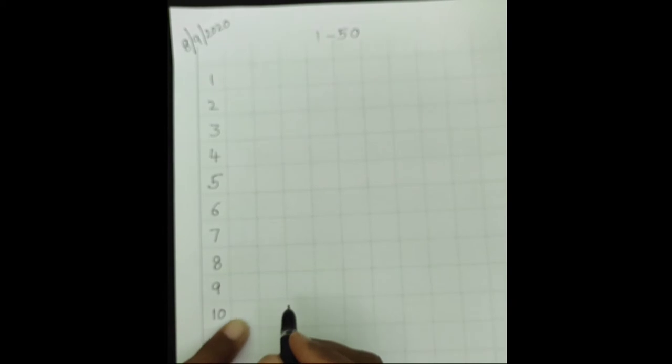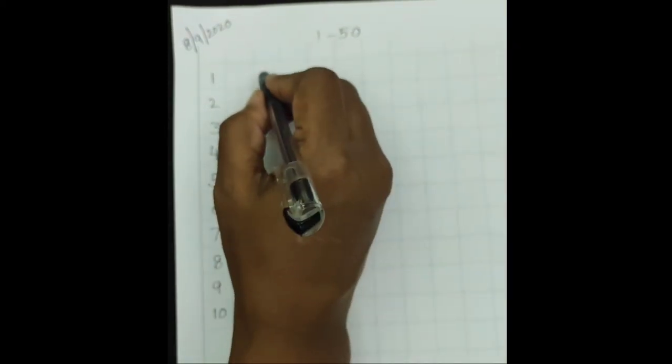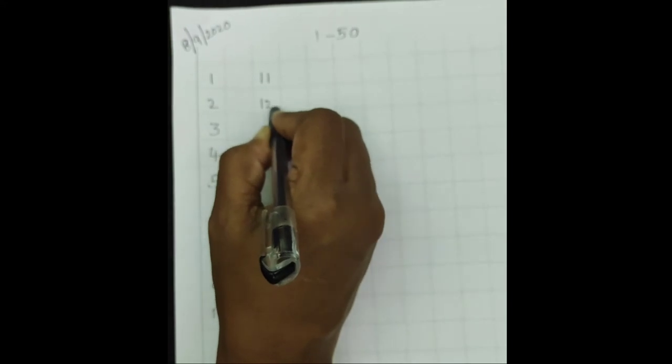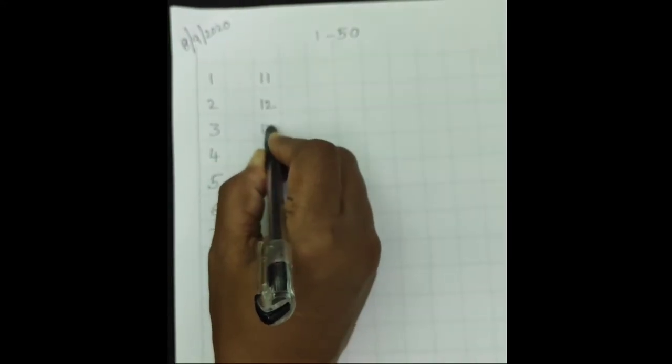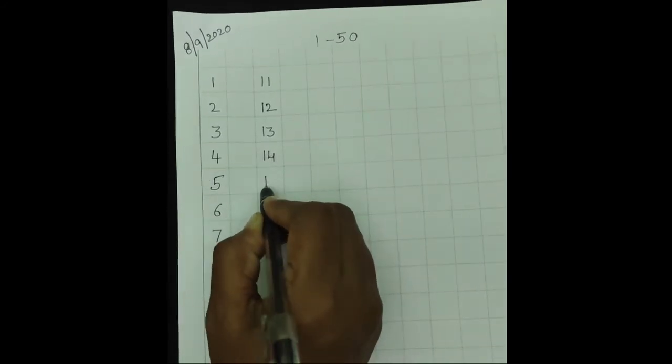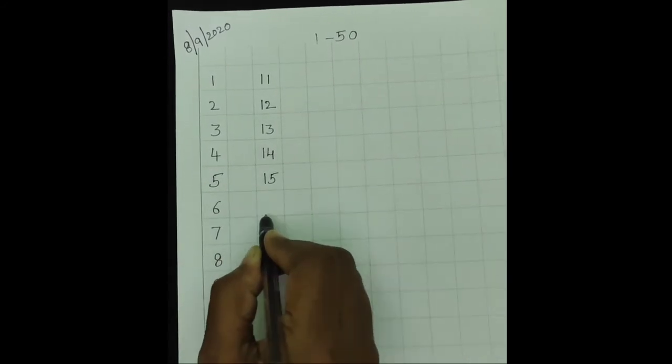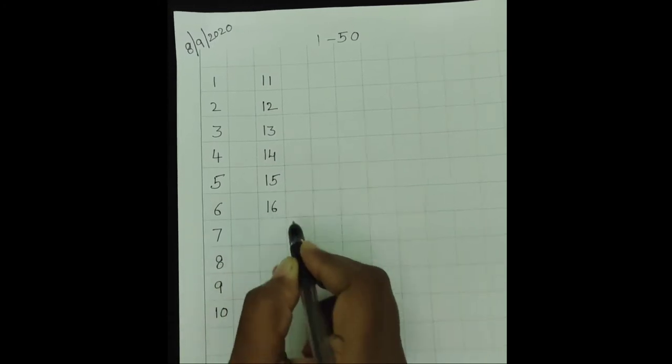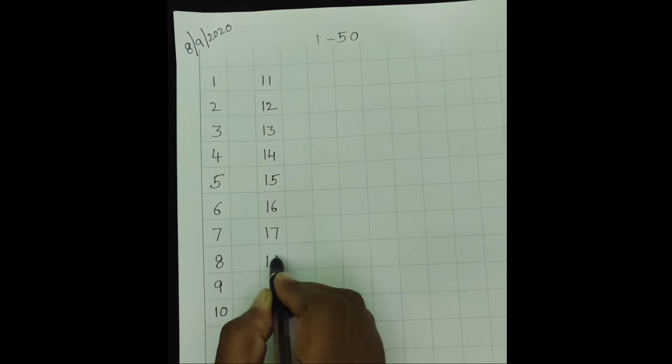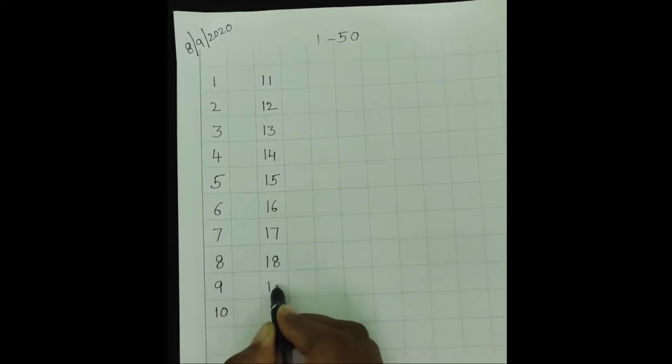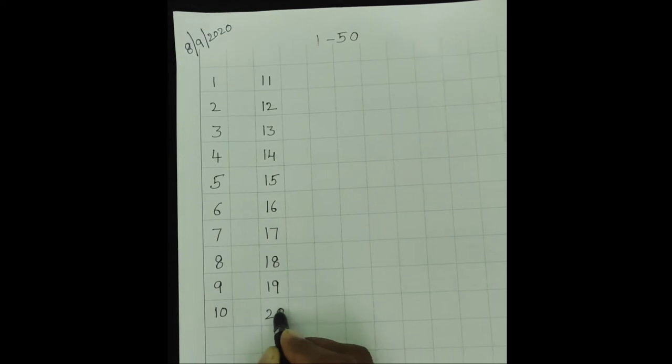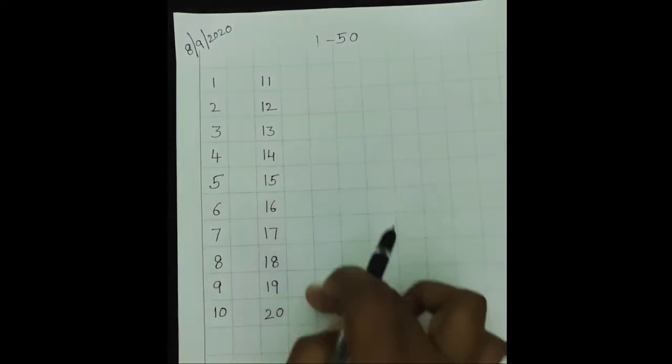Understood children? Next line, write: 1, 1, 11, 1, 2, 12, 1, 3, 13, 1, 4, 14, 1, 5, 15, 1, 6, 16, 1, 7, 17, 1, 8, 18, 1, 9, 19, 2, 0, 20. Leave one line.